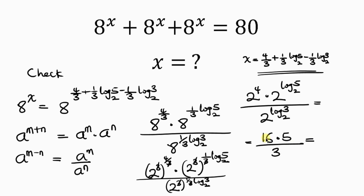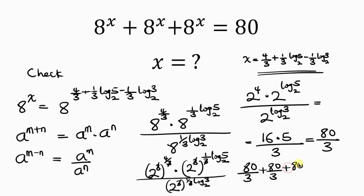Now this becomes 16 times 5 is 80, all over 3. So we have one of them as 80 over 3. Since all three terms are the same, we add 80 over 3 plus 80 over 3 plus 80 over 3. The denominators are the same, so 80 plus 80 plus 80 is 240, and 240 divided by 3 is 80. So we've got the left-hand side equal to the right-hand side.